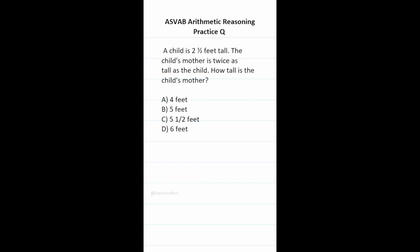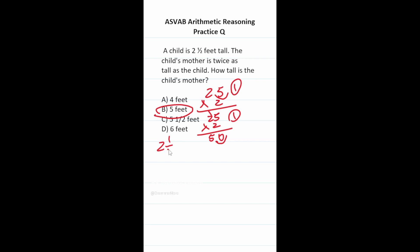This arithmetic reasoning practice test question says a child is two and a half feet tall. The child's mother is twice as tall as the child. How tall is the child's mother? Since this is an easy question, I'll solve it three ways. Mentally: two and a half times two is five feet. Using decimals: 2.5 times 2 — shift decimal right to get 25 times 2 = 50, bring decimal back = 5.0. Using fractions: two and a half is 5/2, times 2/1 = 10/2 = 5. The answer is five feet.